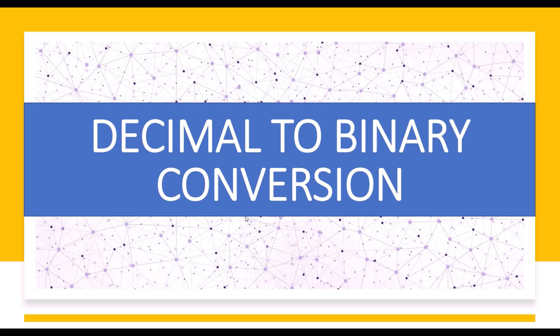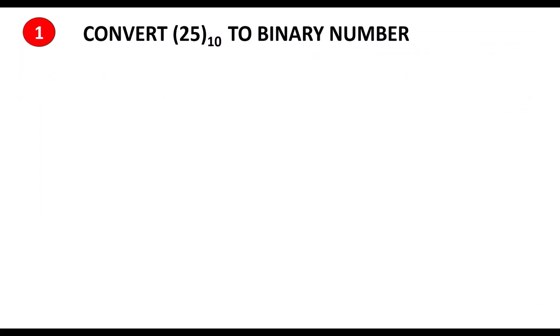Decimal to binary conversion. Problem 1: convert decimal 25 to a binary number.